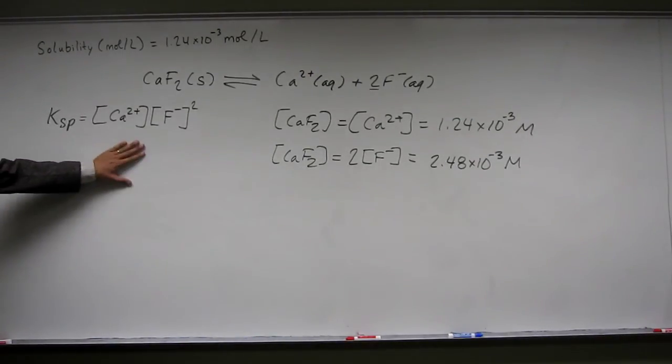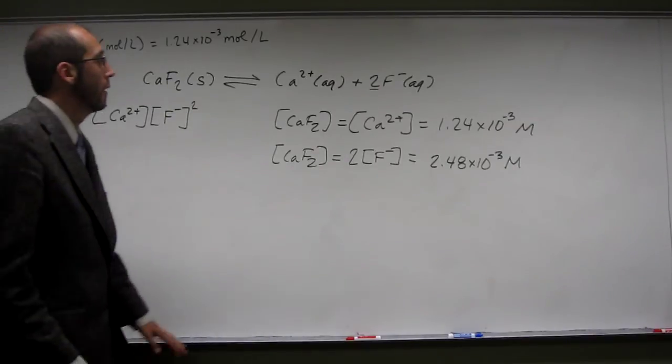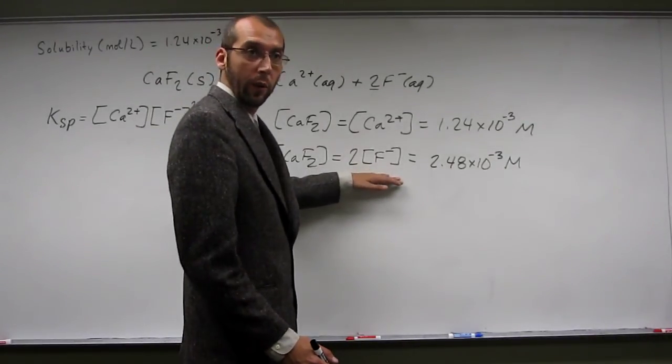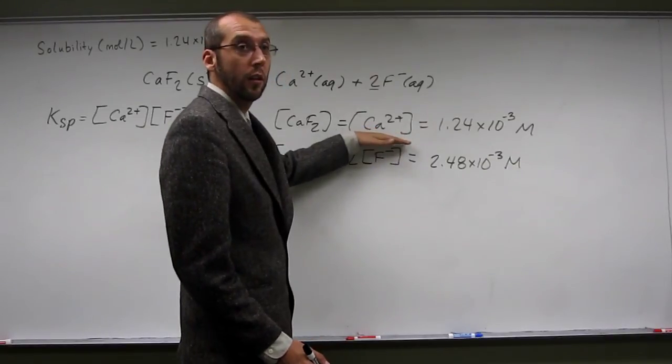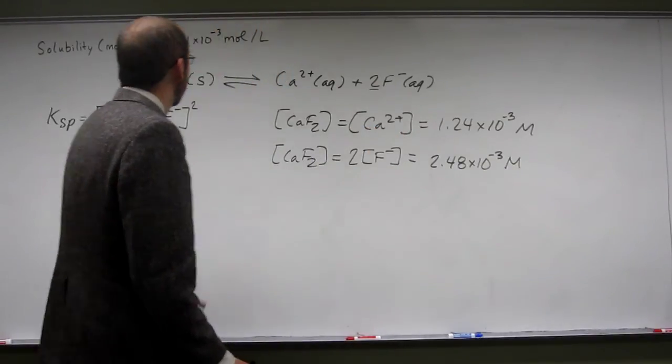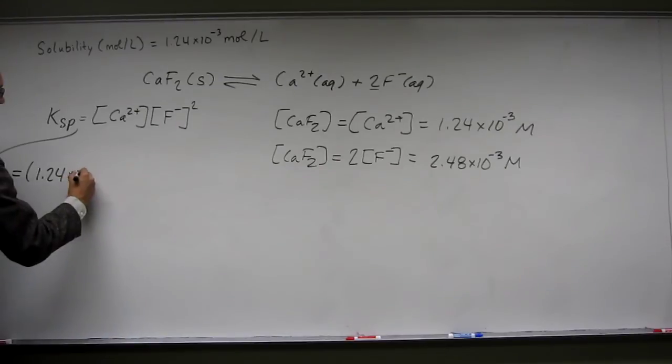Ksp, that's what we're looking for at 35 degrees Celsius. We have the concentration now of fluoride ions and the concentration of calcium ions. So all we're going to do is plug those into this equation here. So 1.24 times 10 to the negative third.